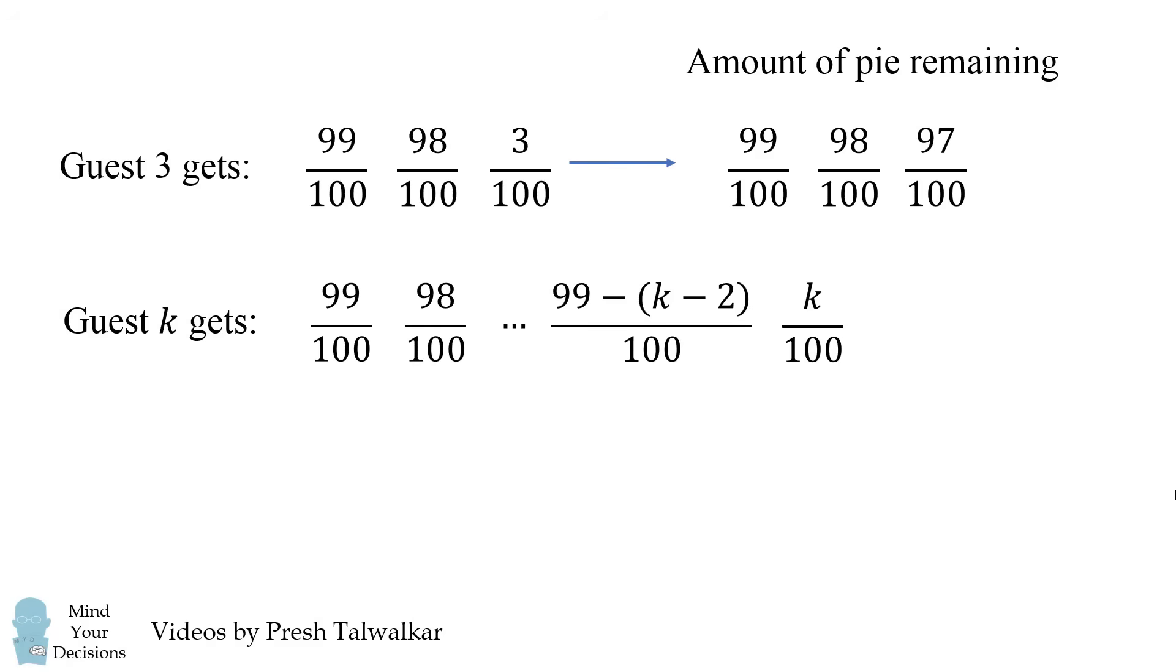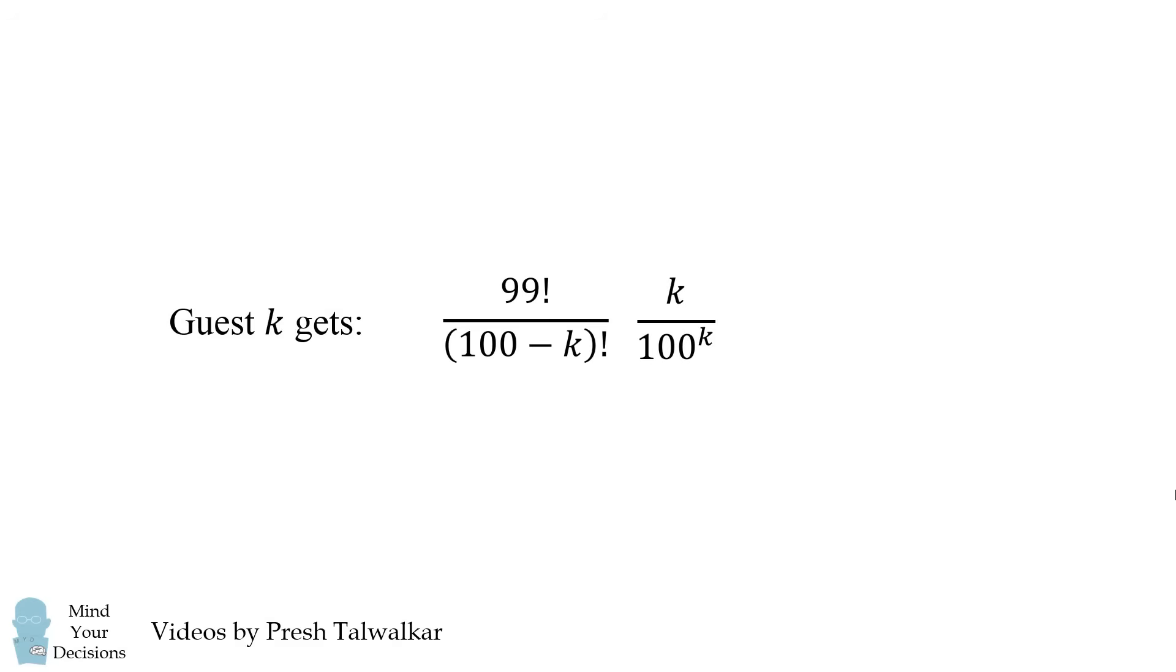We can simplify this formula as follows. And we can further simplify it because this denominator is equal to the quantity 100 minus k factorial. So now, what can we make out of this fraction?